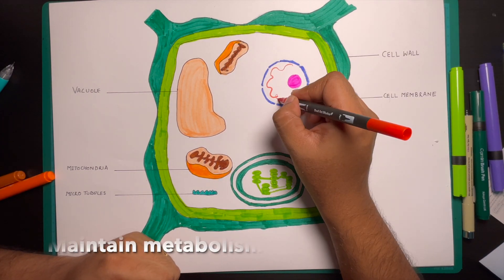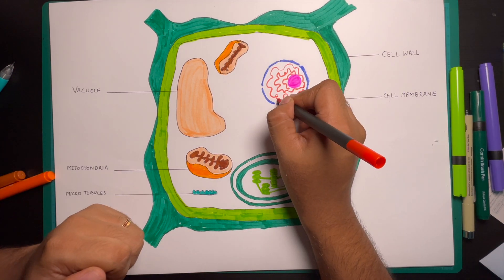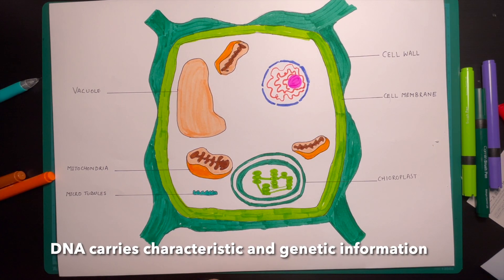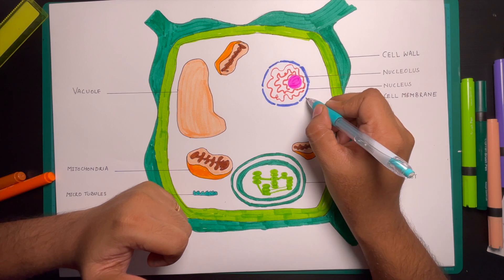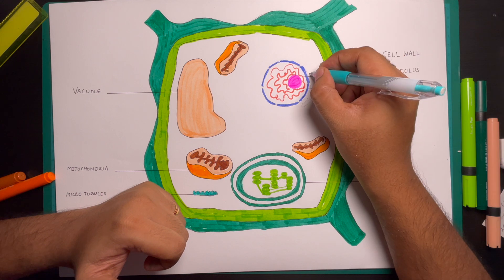The main functions are: it maintains the metabolism, also called the brain of the cell. DNA of the chromosome carries characteristics or genetic information of the species from one generation to next. Also plays an important role in cell division.